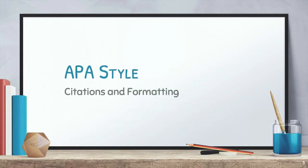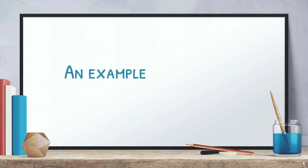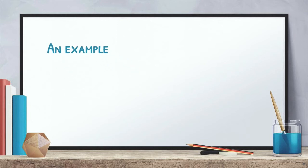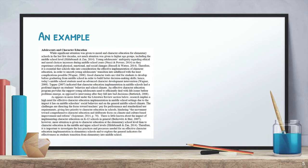Today we are talking about citations and formatting in APA Style. Here's an example of what I will be talking about in this video. Let's say you're reading an article about a current issue in education, and you run across someone's last name in parentheses at the end of a sentence or paragraph. What does that mean? Let's look at examples in this article about character education in middle school.